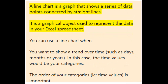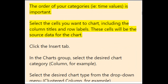A line chart shows a series of data points connected by straight lines. Use a line chart when you want to show a trend over time, such as days, months, or years. In this case, the time values would be your categories, and the order of your categories (i.e., time values) is important.